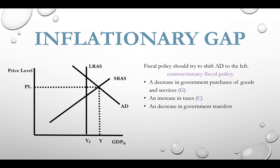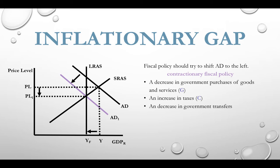Here's an inflationary gap. You can see that we are operating beyond our full potential — prices are higher than they would normally be. In this case, the government wants to engage in contractionary fiscal policy: they can decrease purchases, increase taxes, or decrease government transfer payments. This will shift aggregate demand to the left, creating a new aggregate demand curve, a lower price level, and equilibrium at full employment level of output. These are the two corrections for a recessionary gap and an inflationary gap.